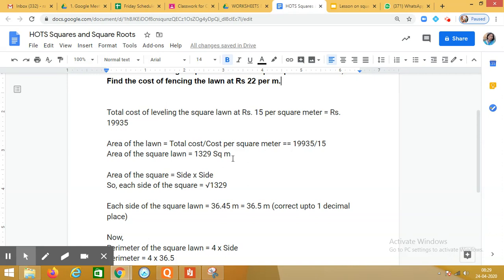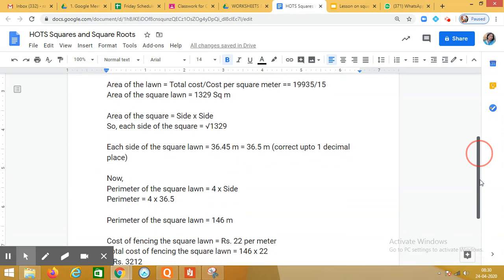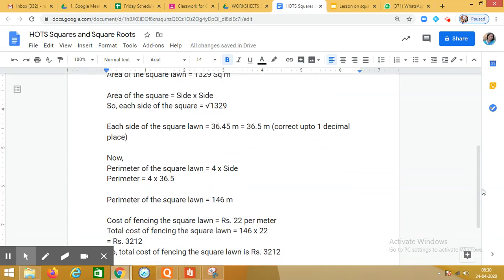Now we know that area of the square is given by the formula side into side. So what will be each side of the square? As we know that side cannot be negative, we will just take square root of 1,329. The answer is 36.45 meters. We will be rounding off the second digit, so the answer is 36.5 meters, correct up to 1 decimal place.